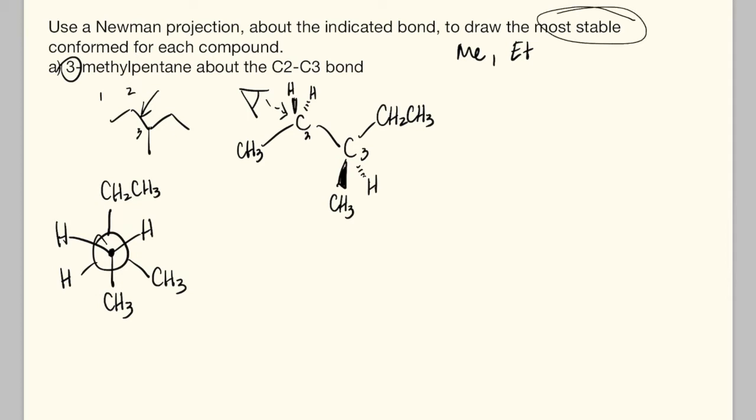Now if we're interested in drawing the most stable conformation, let's rotate this 120 degrees. We want to take this ethyl and move it here, this methyl move it here, and this hydrogen move it here.